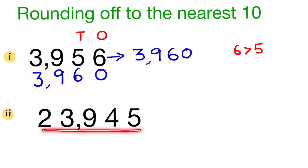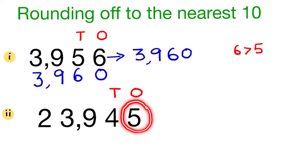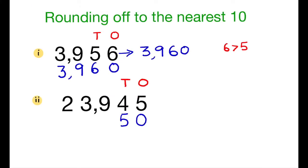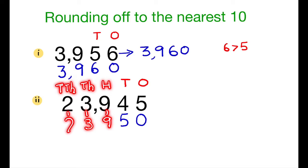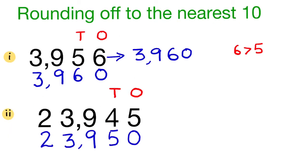Next number: 23,945. The digit in the ones place is 5 and the digit in the tens place is 4. Since the digit in the ones place is 5, we add 1 to the digit in the tens place. So, 4 plus 1 is 5. We write 0 in the ones place. There will be no change for the digits in the hundreds, thousands and ten-thousands place. We write 9 in the hundreds place, 3 in the thousands place and 2 in the ten-thousands place. So, 23,945 is rounded off to 23,950.